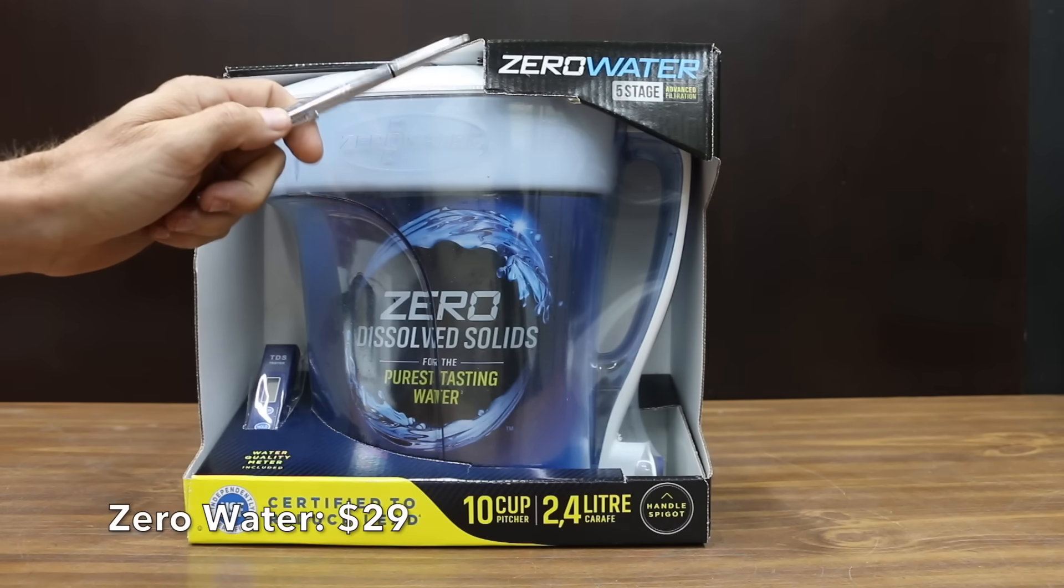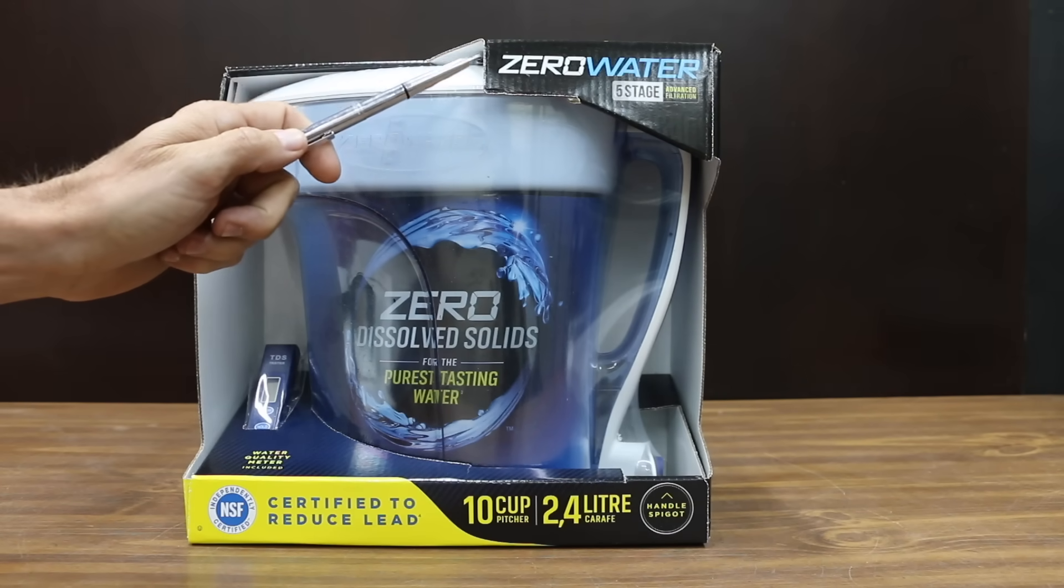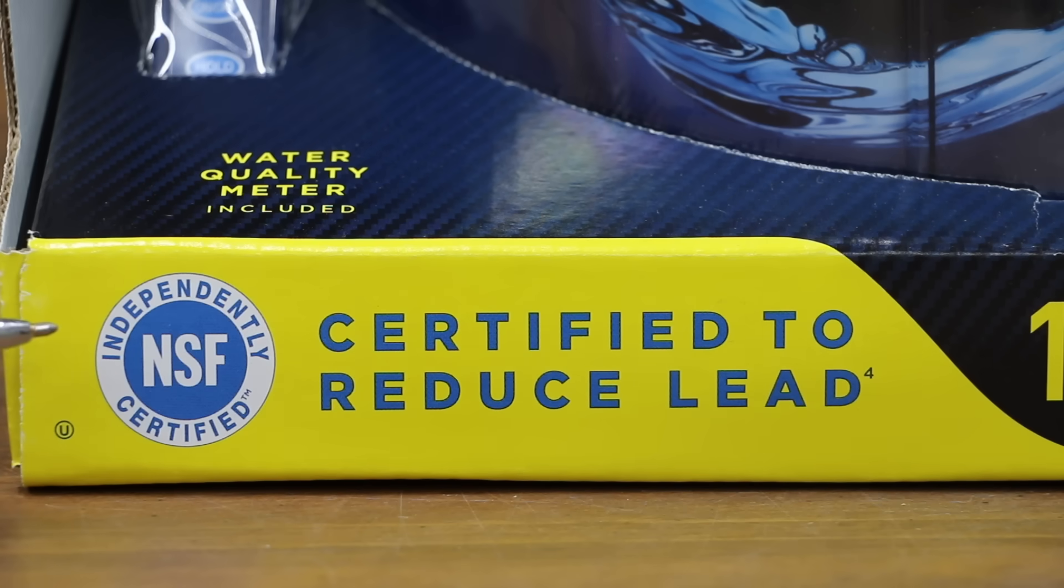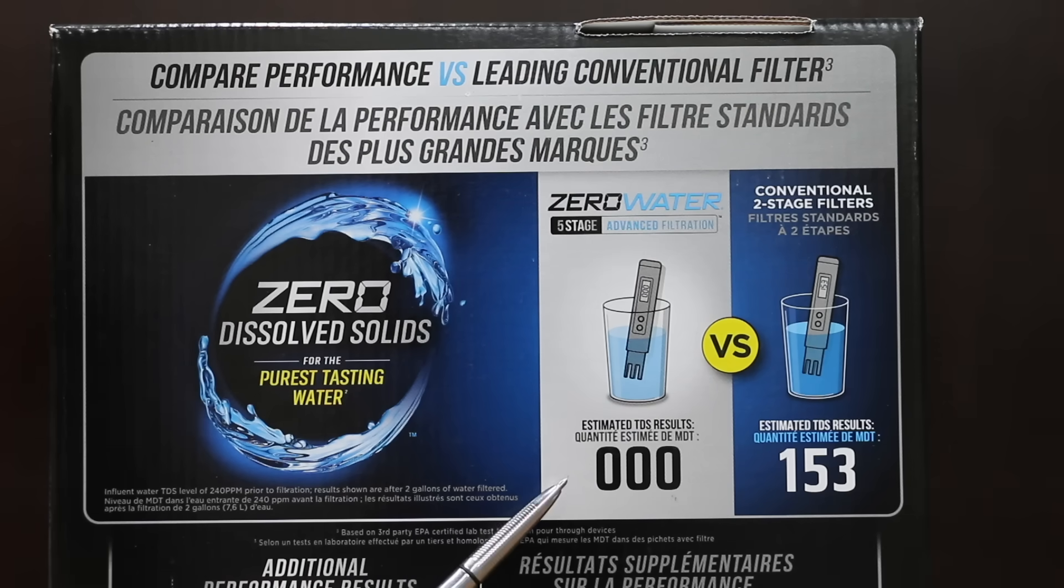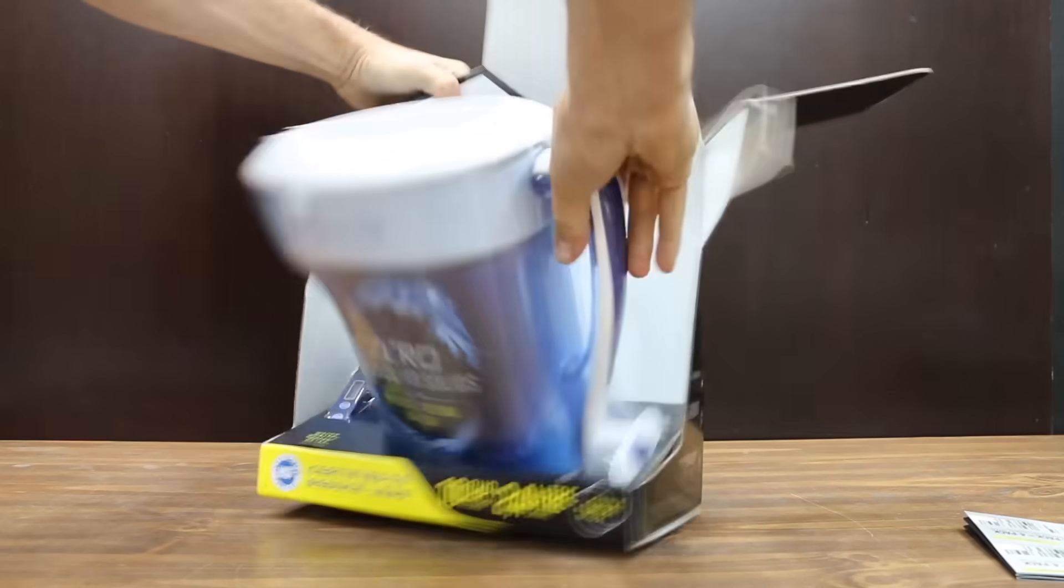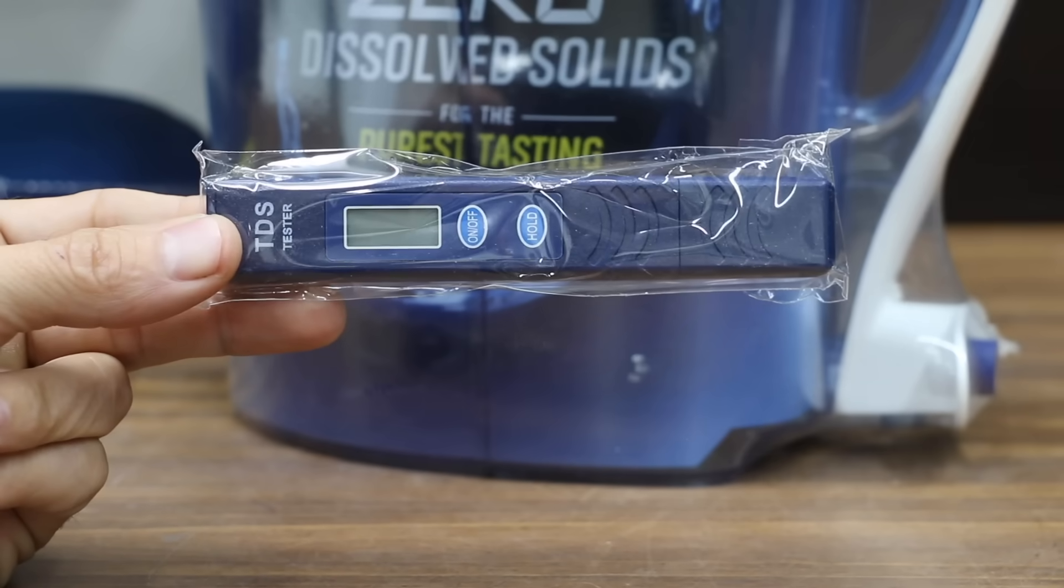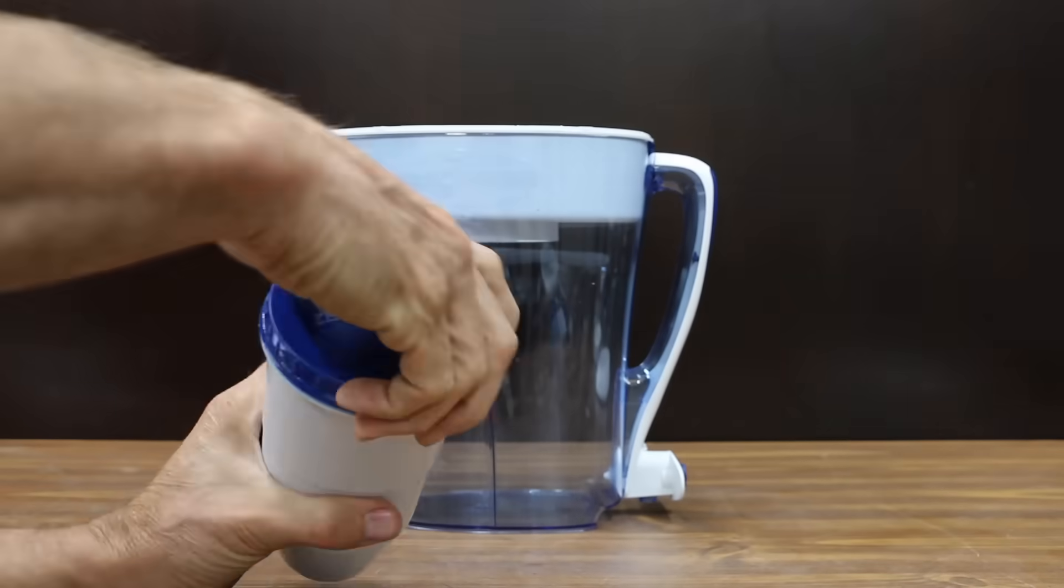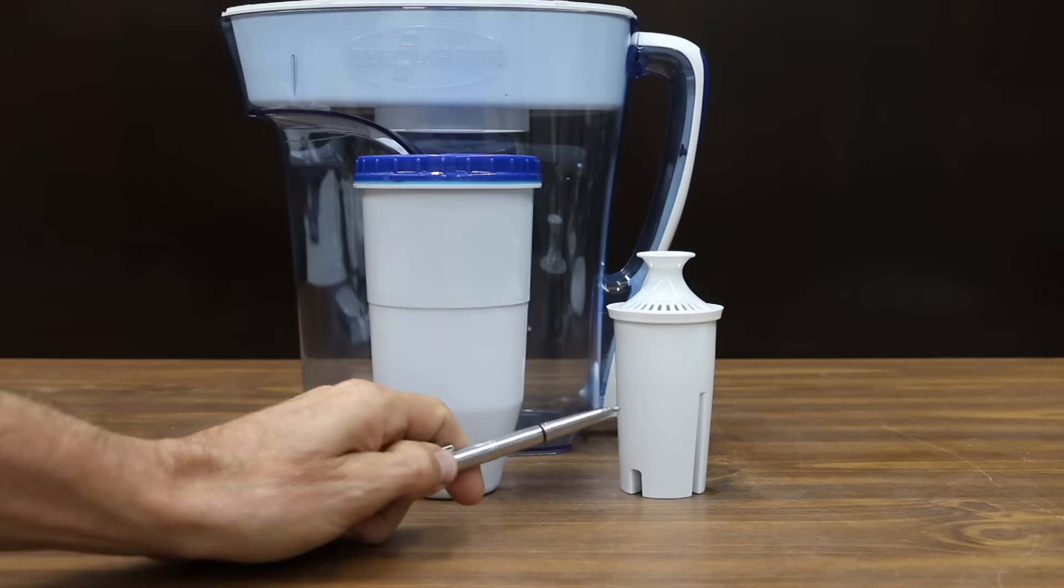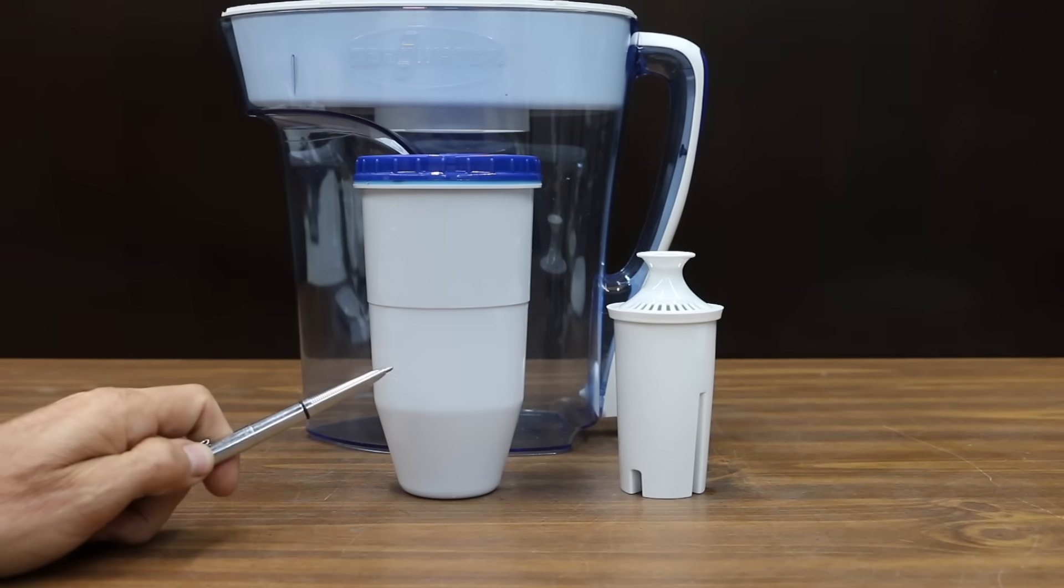At a price of $29 is this Zero Water 5-Stage Advanced Filtration System. 10 cup pitcher. Certified to reduce lead. Zero dissolved solids for the purest tasting water. Zero Water claims zero dissolved solids compared to 153 particles per million for the competition. We're going to test that. Zero Water 5-Stage Ion Exchange Filter. Water quality meter included. Designed in USA, assembled in Mexico with imported components. The filter on the left is from the Zero Water, the filter on the right is from Brita. And there's a huge size difference. We'll soon see if size matters when it comes to filters.